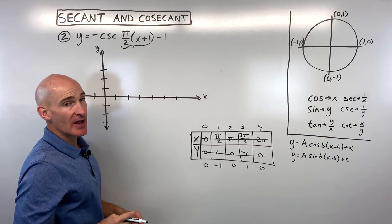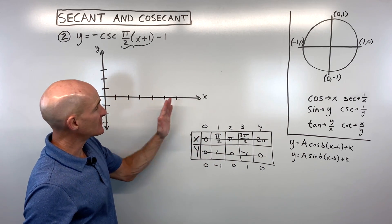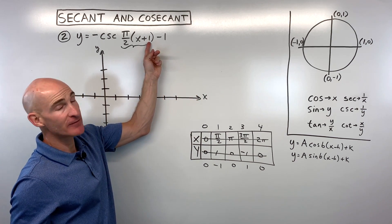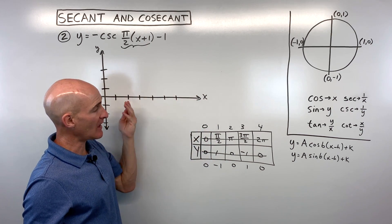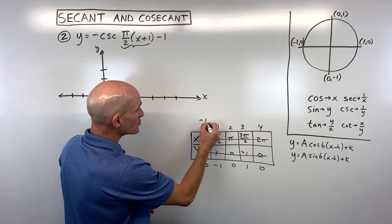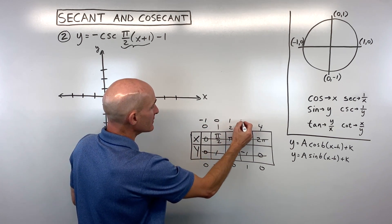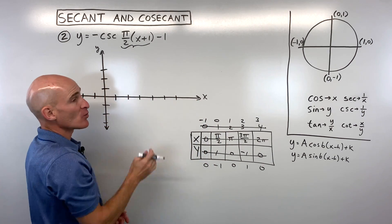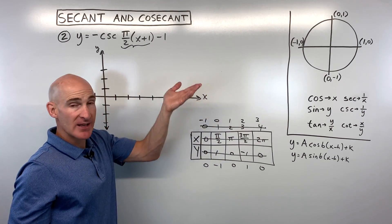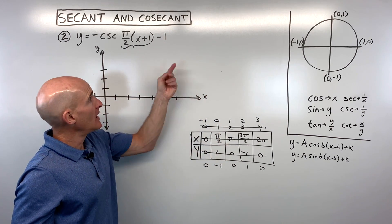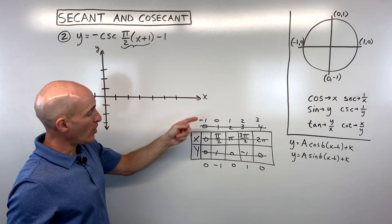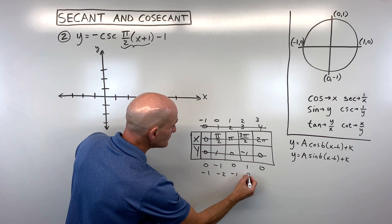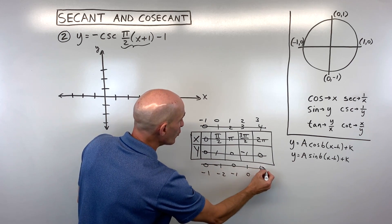The h-value is +1, grouped with x — it has the opposite effect, shifting left 1, so we subtract 1 from all x-values. Then the k-value of −1 is a vertical translation shifting the graph down 1, so we subtract 1 from all y-values.